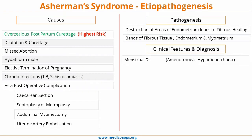Regarding clinical features, most patients are asymptomatic, but they may present with menstrual disturbances like amenorrhea or hypomenorrhea, infertility, early pregnancy loss, or recurrent miscarriage.